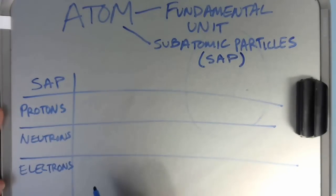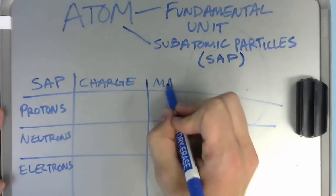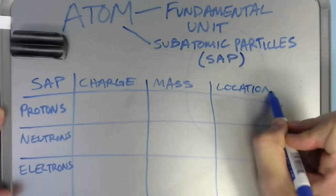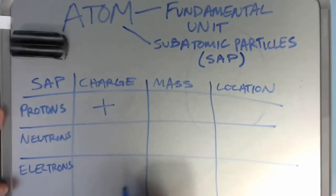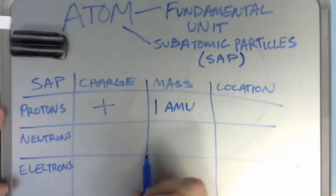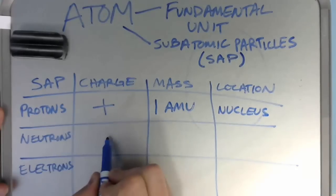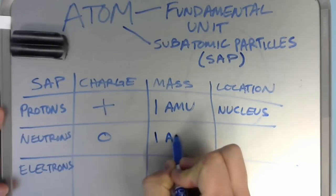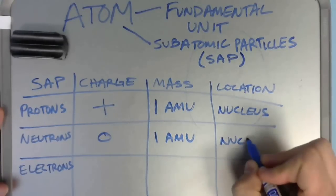Each subatomic particle is slightly different in its charge, mass, and location. Protons have a positive charge and a mass of one atomic mass unit, and they are located in the nucleus. Each neutron does not have a charge, has a zero charge, but also has a mass of one atomic mass unit, and is also located in the nucleus.